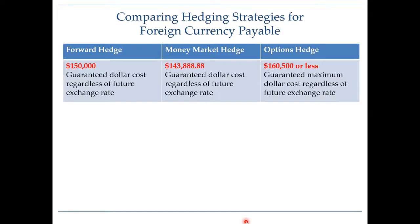Let's compare the three different hedging strategies we have covered for foreign currency payable. We purchased antiques from a UK seller and have to deliver a payment of £100,000 in one year's time. Our concern is what it's going to cost us in dollars, since we do not know what the future spot rate will be. The cost with forward hedge is guaranteed at $150,000, regardless of future exchange rate.